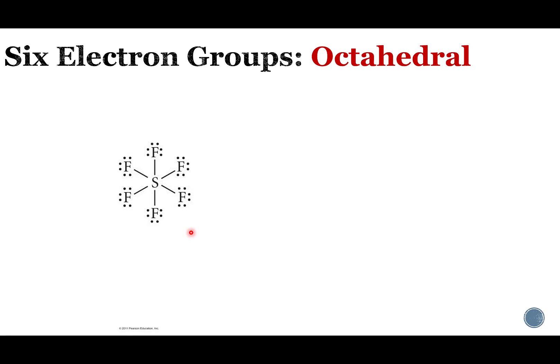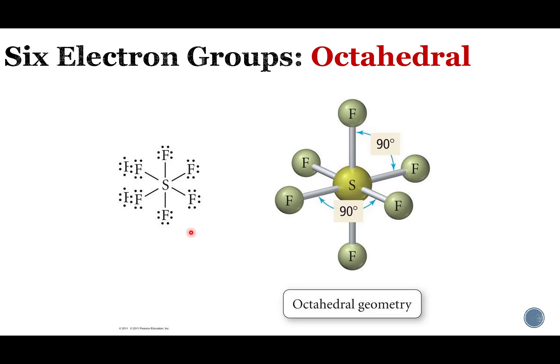The other option is a six electron group species, which is called octahedral. What we have here is kind of a square base in the middle, with one pyramid going up to the top and one pyramid coming down to the bottom — a square base pyramid idea. Fun fact: it's called octahedral because there are eight faces to this particular geometry.